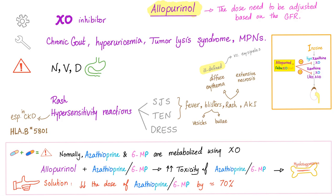Allopurinol: very cheap and very effective. Mechanism of action: xanthine oxidase inhibitor. Clinical uses: chronic gout, hyperuricemia, tumor lysis syndrome, and myeloproliferative neoplasms since they can have gout and hyperuricemia. Side effects: nausea, vomiting, diarrhea, and rash. Serious hypersensitivity reactions include Stevens-Johnson syndrome, toxic epidermal necrolysis, and DRESS syndrome — drug-related eosinophilia with systemic symptoms.